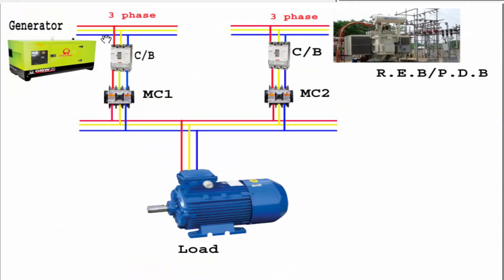I am going to go to the channel — the generator 3-phase, which is the industry, which is the connection. There is the generator, the RAB and the PDB. This is the same as the system. There is one of the two magnetic contacts.